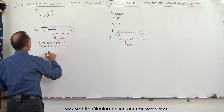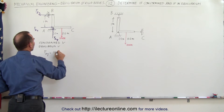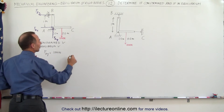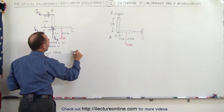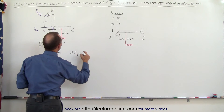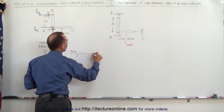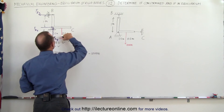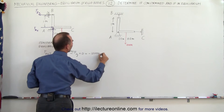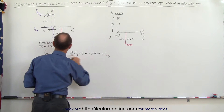Therefore, we can write that the force at A in the y direction must equal 1000 newtons. This comes from the idea that the sum of the forces in the y direction must add up to zero: minus 1000 newtons from the applied force, plus F sub A in the y direction equals zero.